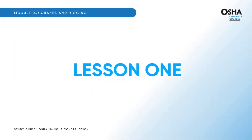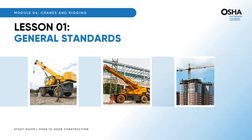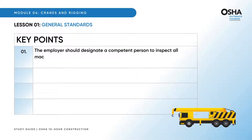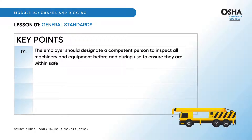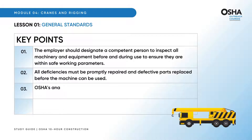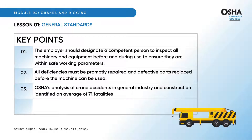Now we will initiate the first lesson, which covers general standards. The key points are: the employer should designate a competent person to inspect all machinery and equipment before and during use to ensure they are within safe working parameters. All deficiencies must be promptly repaired and defective parts replaced before the machine can be used. OSHA's analysis of crane accidents in general industry and construction identified an average of 71 fatalities per year.